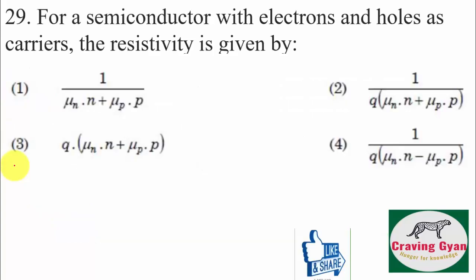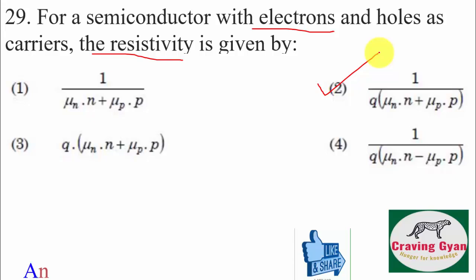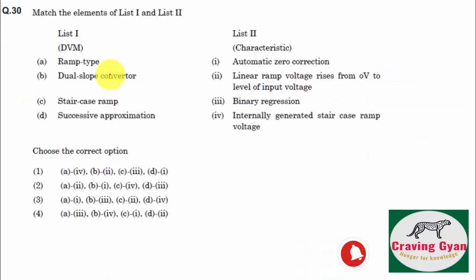Twenty-ninth question — asked many times: for a semiconductor with electrons and holes as carriers, the resistivity is given by ρ = 1/σ = 1/(N·q·μn + P·q·μp). Hence option B is correct.